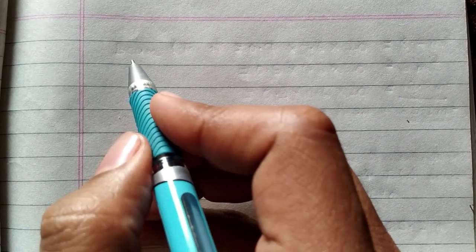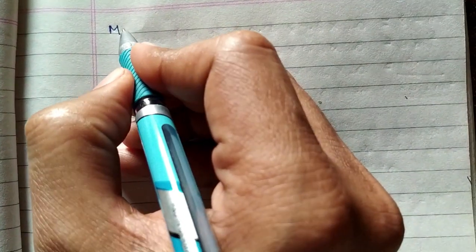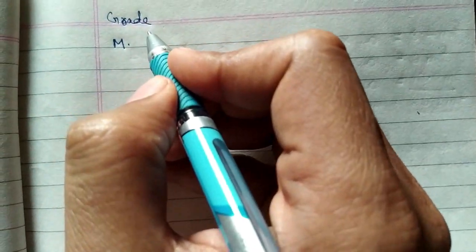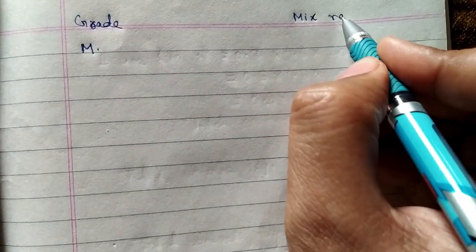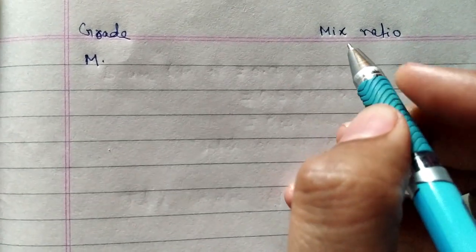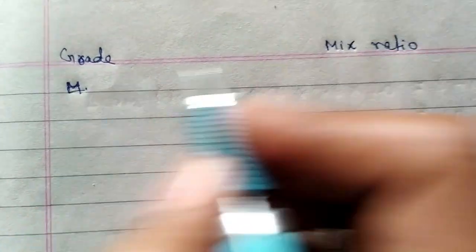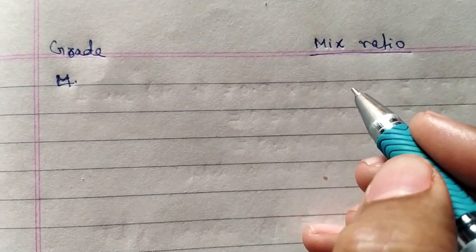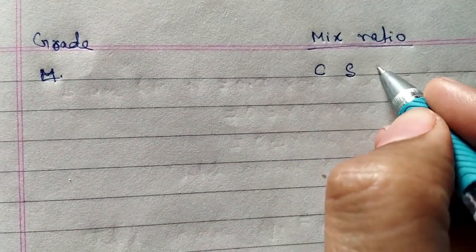Friends, now we discuss about different grade concrete mix ratios. So firstly we write different concrete grades. This is mix ratio. Mix ratio is the ratio of cement, sand and aggregate.